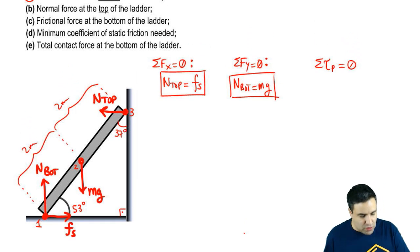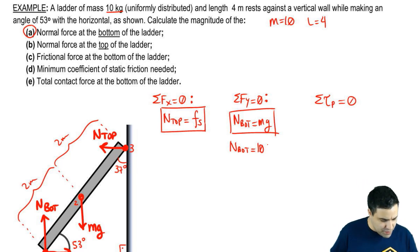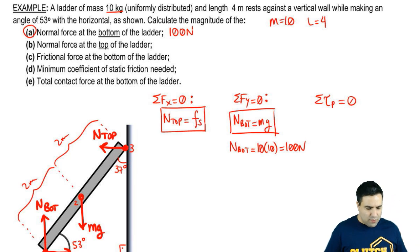So let's see. Here we want to find the normal force at the bottom of the ladder. This one is the easiest thing to find. That's why I put it here first. Normal at the bottom is just mg. Here we have mg. So n bottom is mg. We're going to use 10 as well for g. And this is going to be 100 newtons. So that's easy. This is just 100 newtons.